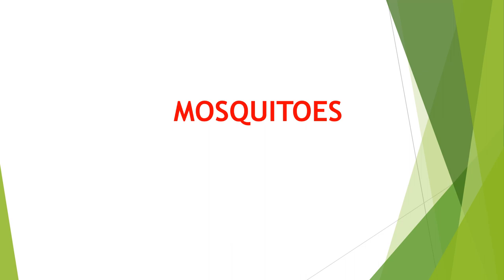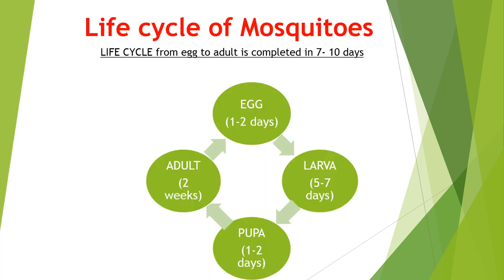Starting with the mosquitoes — mosquitoes are arthropods from Class Insecta. Starting with the life cycle of mosquitoes: the life cycle has four stages — egg, larva, pupa, and adult. The egg stage lasts for one to two days, the larval stage lasts for five to seven days, the pupal stage lasts for one to two days, and the adult lives for about two weeks. The total life cycle, from egg to adult, is completed in seven to ten days.